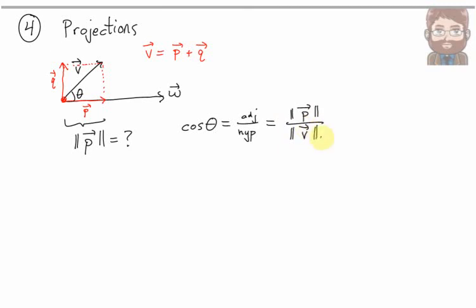So I could actually solve for the length of vector P. It's the length of vector V times cosine of theta. Now I need to know cosine of theta. But fortunately, we just figured that out.